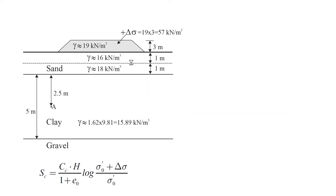Now let's look at this schematic diagram — I've already put some numbers here and I'll explain where we get all these values from. First, we need the unit weight of the material used for embankment construction, which in this case is 19 kN/m³ — this is given to us.